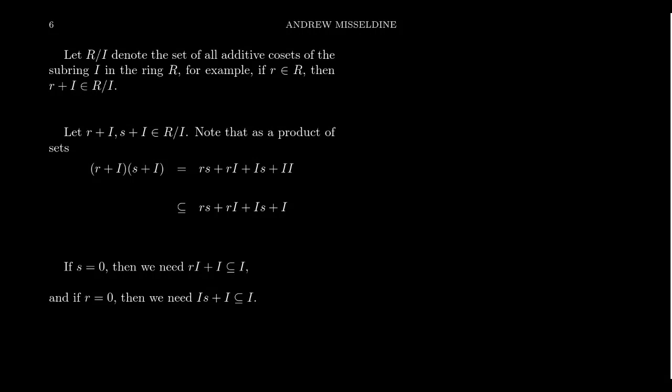We have seen when studying the isomorphism theorems for groups that kernels of group homomorphisms were equivalent to the notion of a normal subgroup. The other direction is also true: normal subgroups are the only types of subgroups you can mod out when taking a quotient group, the only things you can quotient out to get a well-defined multiplication. Essentially, normal subgroups and kernels are equivalent notions inside of group theory.